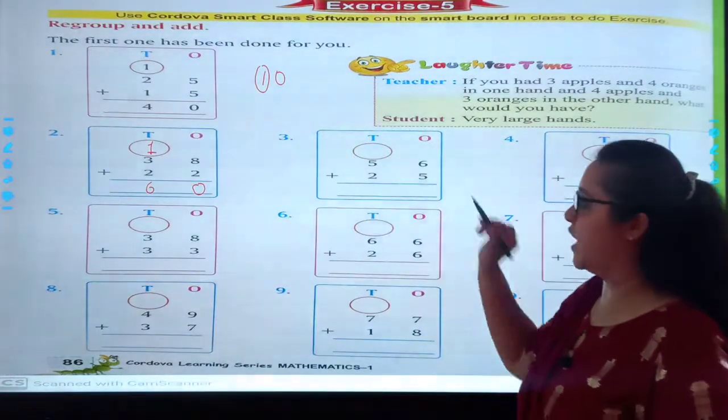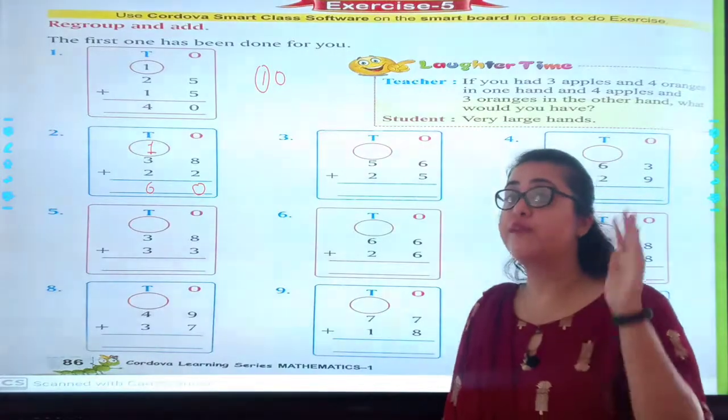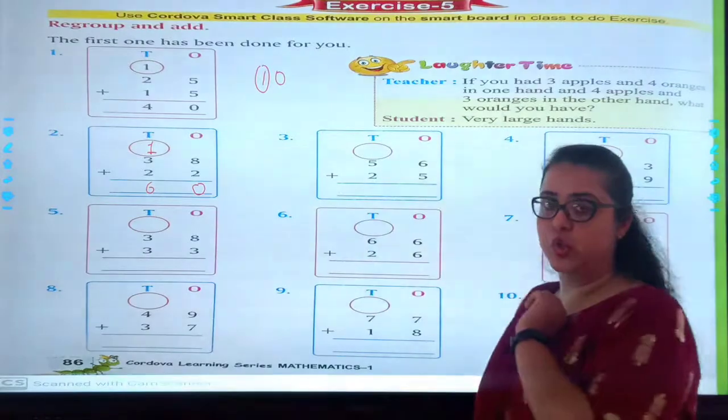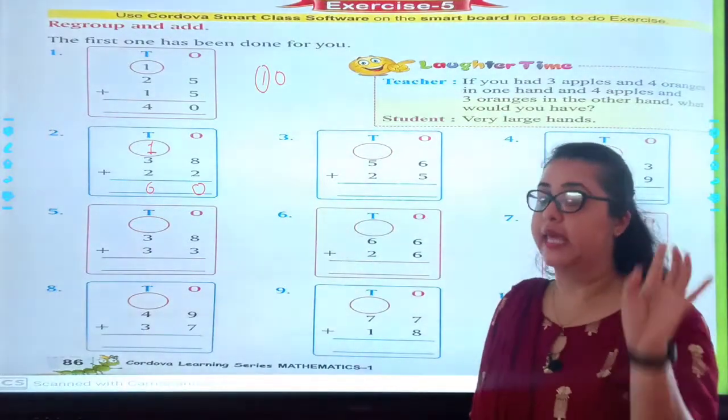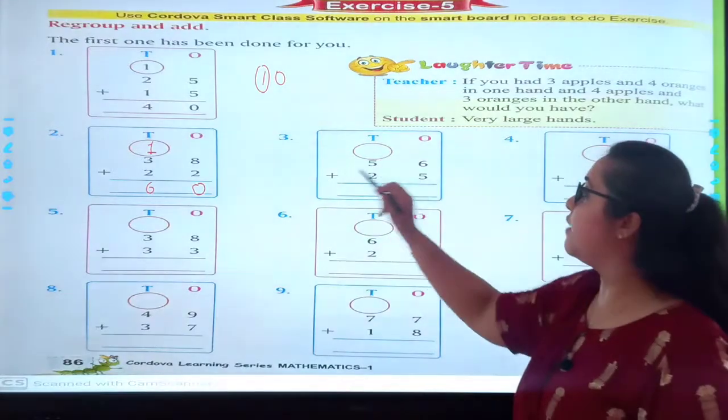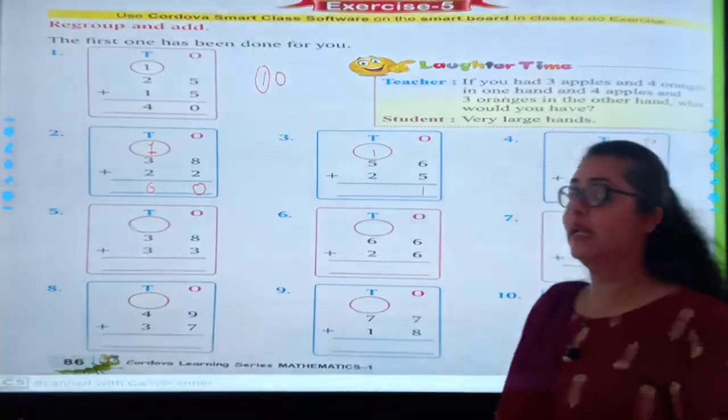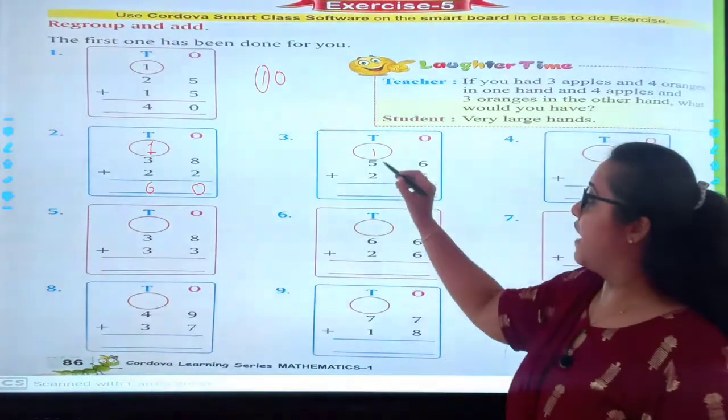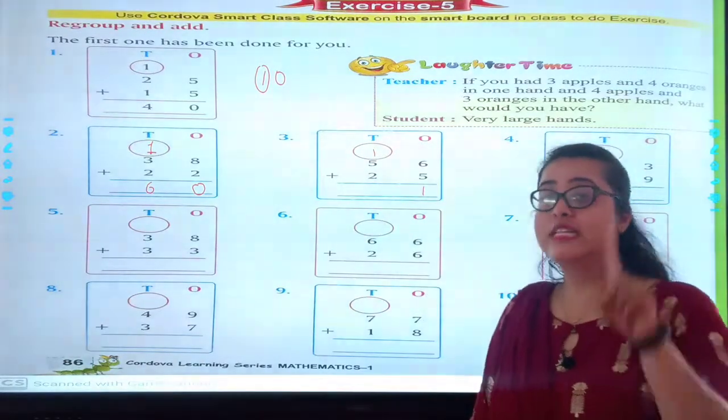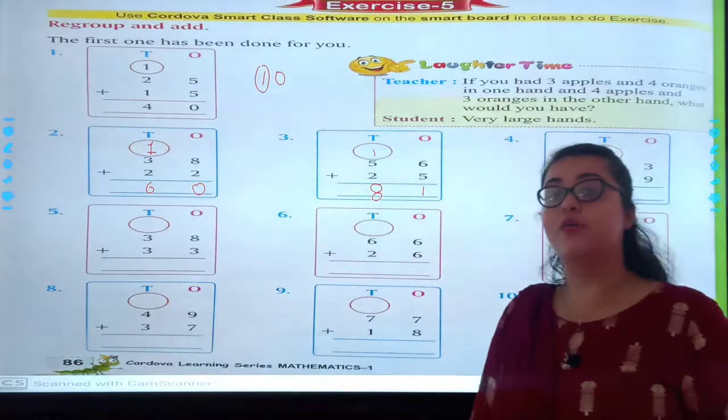6 plus 5. When we have 2 digit numbers, first of all we will only focus on ones. Now we don't look at tens. 6 plus 5? 11. Write 1 in ones place, 1 carries forward. 5 plus 1 is 6, plus 2 is 8.